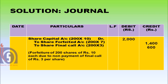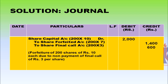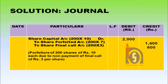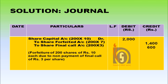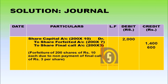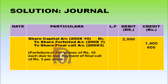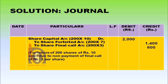For forfeiture of shares, the accounting entry shall be: share capital account debited — 200 shares multiplied by rupees 10 per share equals rupees 2000; to share forfeited account — 200 shares into rupees 7 per share equals rupees 1400; and to share final call account — 200 shares into rupees 3 per share equals rupees 600. So the accounting entry becomes: share capital account debited 2000, to share forfeited account 1400, to share final call account 600.